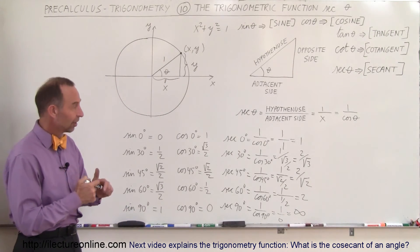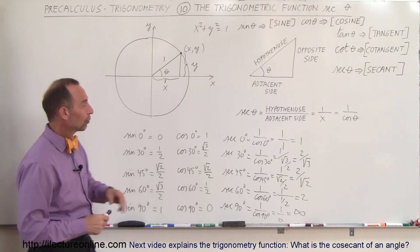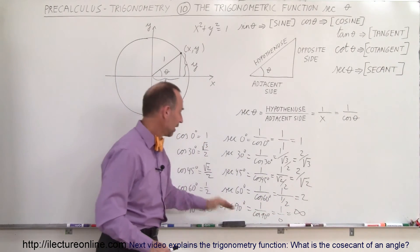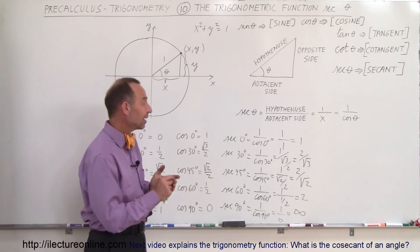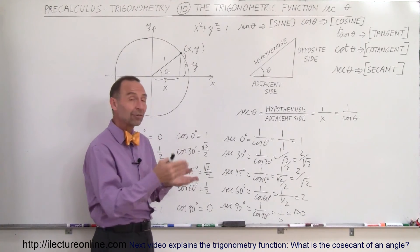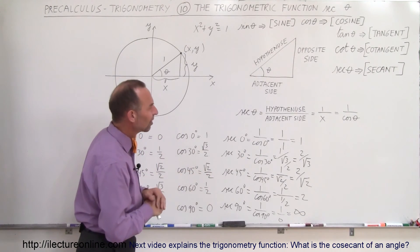So you can see here that the secant of the angle theta goes from 1 for an angle of 0 degrees to infinity for an angle of 90 degrees. In this case, the secant is never 0. Its minimum value is 1, the maximum value is infinity. Does that make sense?